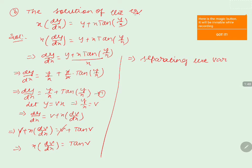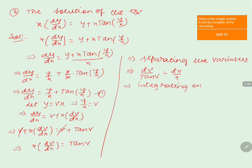When we separate the variables, we get dv/tan(v) = dx/x, that is cot(v)·dv = dx/x. Now, integrating on both sides.